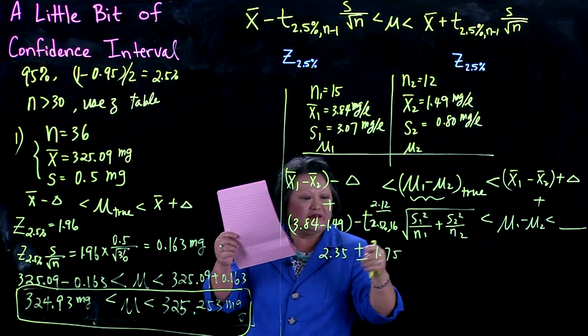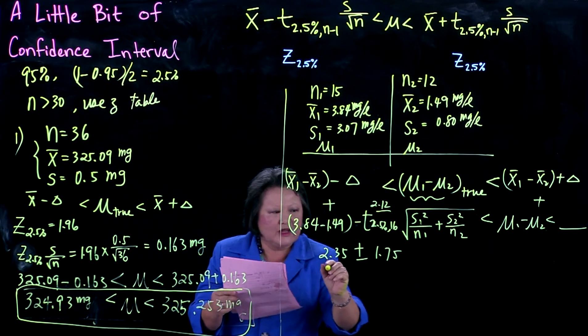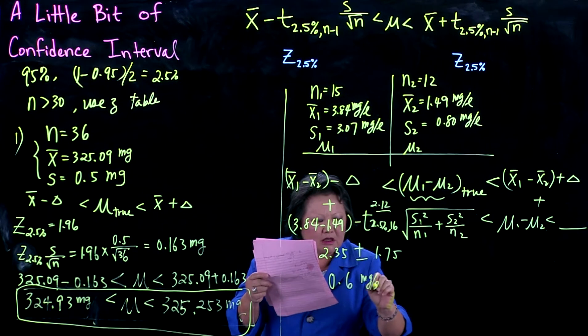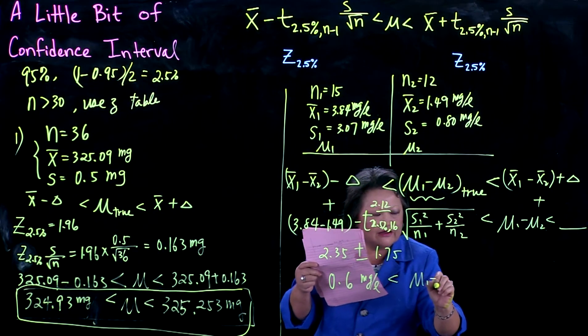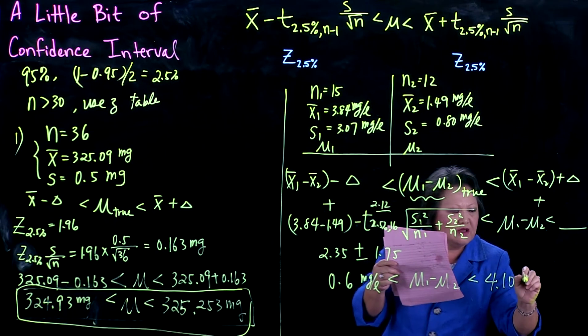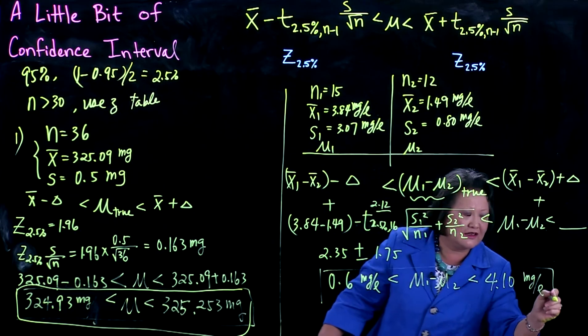When you clean that up, what you have is 0.6 milligrams per liter less than mu1 minus mu2, which is less than 4.1 milligrams per liter. This interval—what does it mean?